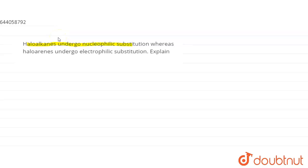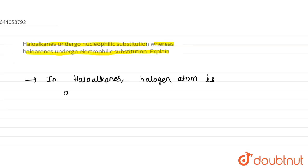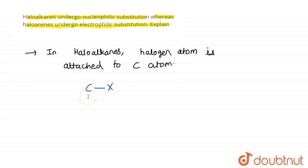In haloalkanes, the halogen atom is attached to the carbon atom. The general representation is C–X, where X represents the halogen atom directly attached to the carbon atom. Since the halogen atom is more electronegative than carbon, a polar character is developed — there is a partial positive and partial negative charge.